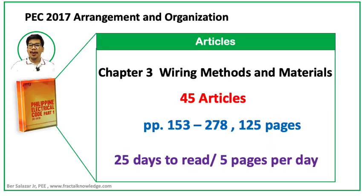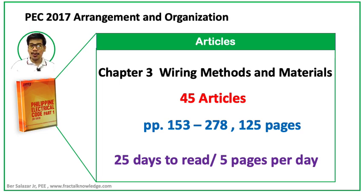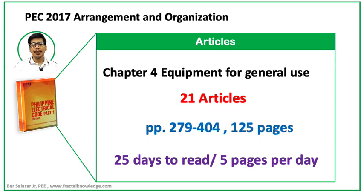Chapter 3 is dedicated to wiring methods and materials and has 45 articles, spanning pages 153 to 278 — almost 125 pages. At 5 pages per day, it will take 25 days to read. Note: there is a minor error in the table of contents — Chapter 2 ends on page 159 yet Chapter 3 starts on page 153. You may find similar errors as you read PEC 2017, and some articles may appear cut off compared to their NEC counterparts. Some corrections have already been issued by the committee.